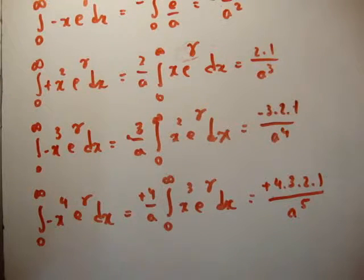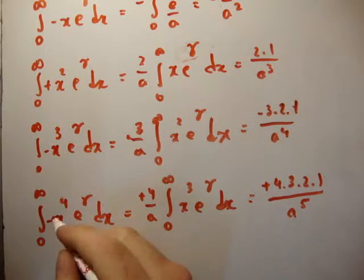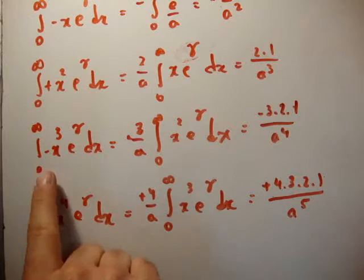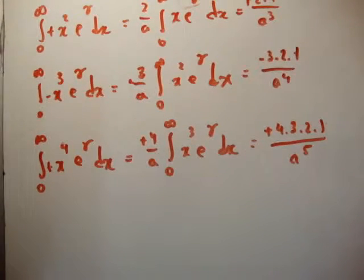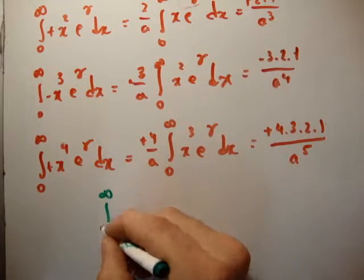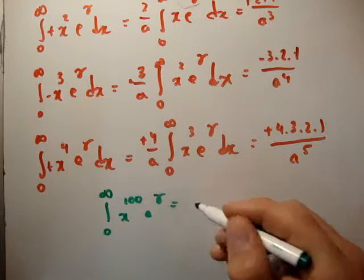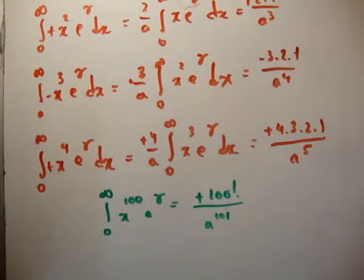We notice that the parity of each integral follows the parity of the corresponding factorial: minus, plus, minus, plus, and so on. That pattern holds all the way along. So in general, if we wanted the integral of x to the 100 times e to the minus ax dx, we know the answer would be plus 100 factorial over a to the 101. That's pretty straightforward once you see the pattern.